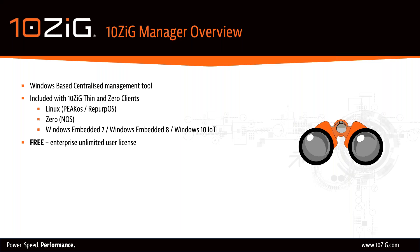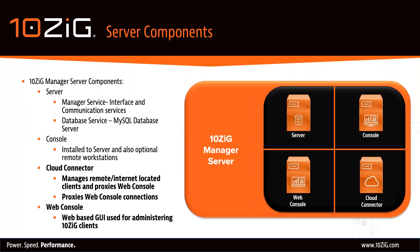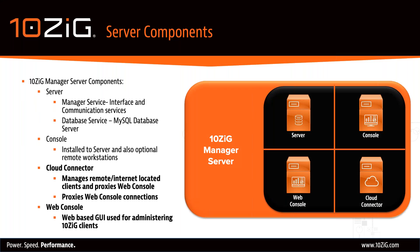This model is now almost unique in the marketplace where competitors choose to charge based on the number of manageable clients as well as specific enterprise-grade features, including cloud or remote management. The Tenzing Manager server consists of a single executable, downloadable from tenzing.com, and consists of four components. The two key ones we'll focus on today are the Cloud Connector and the Web Console.